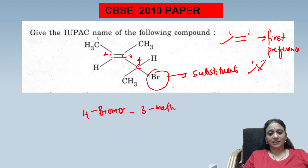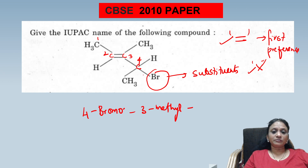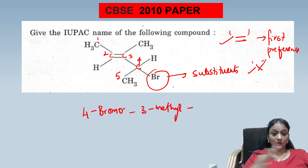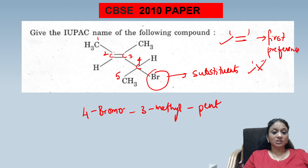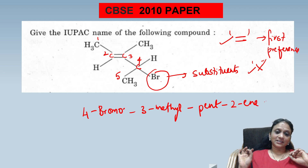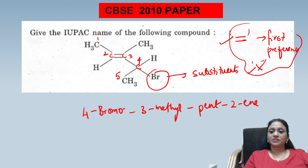At position 3 you have a methyl group, so it is 3-methyl. Then, extend the chain by one more carbon to make it five carbons (pent-). The double bond is after carbon 2, so the final IUPAC name is 4-bromo-3-methylpent-2-ene. Such tricks and naming questions are all explained with clear steps.